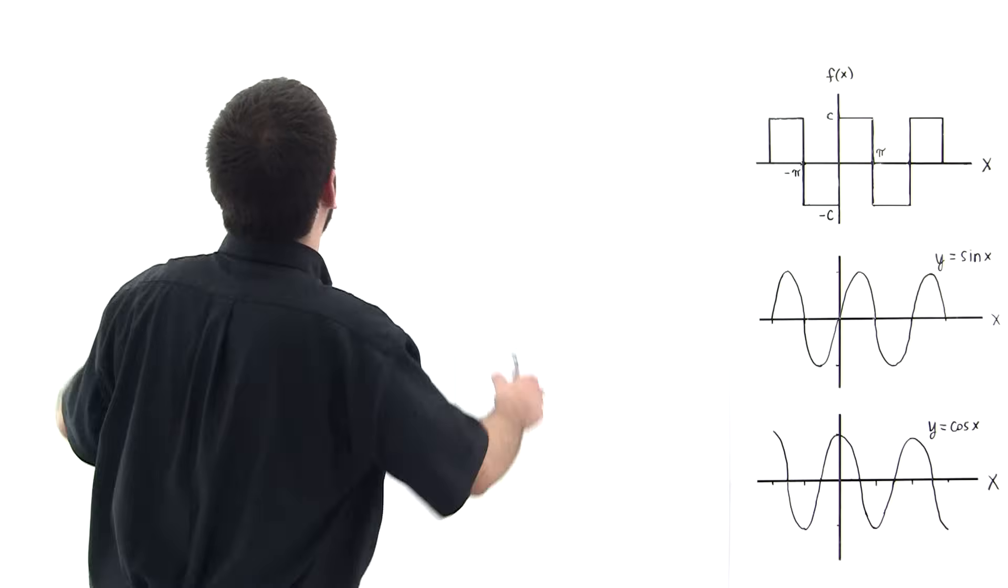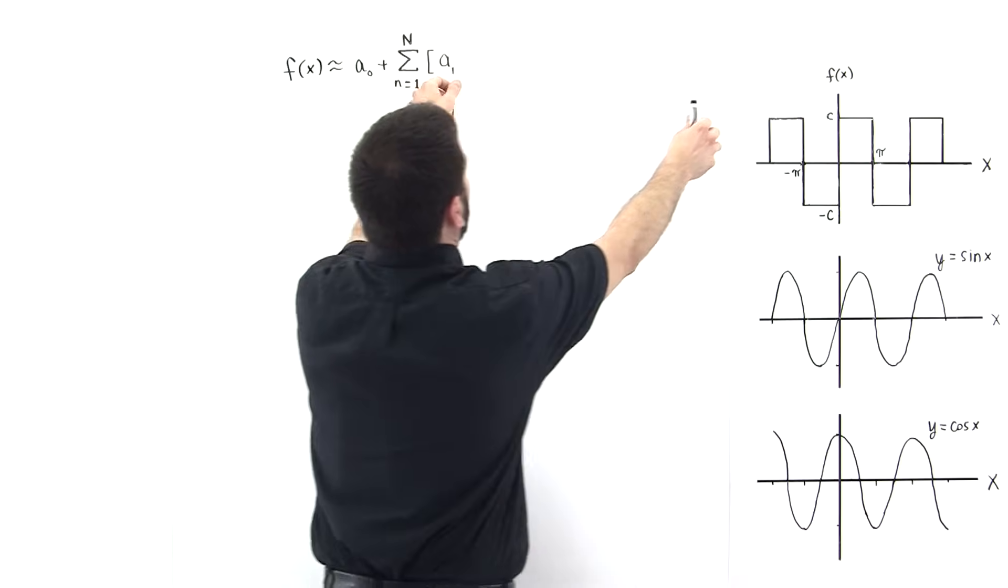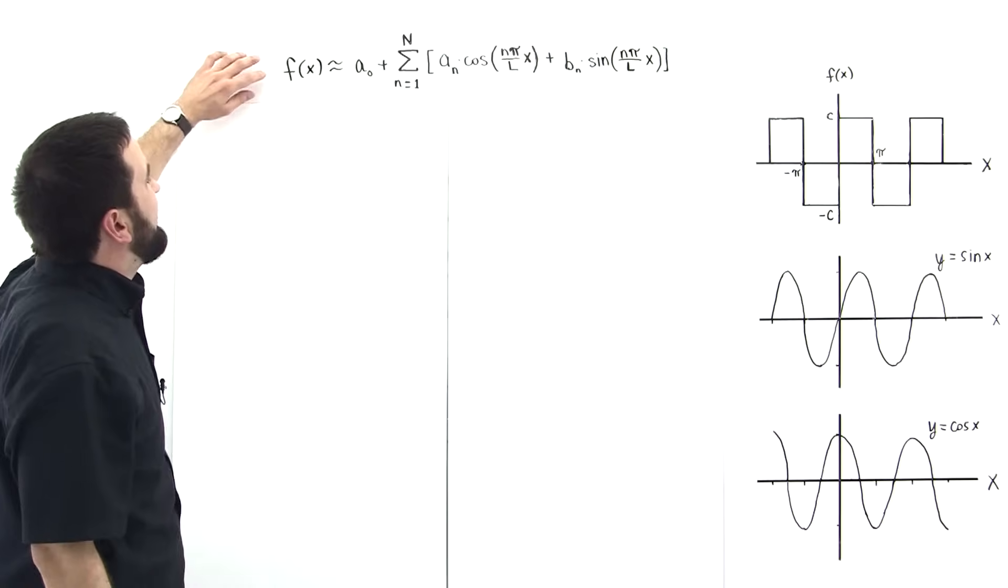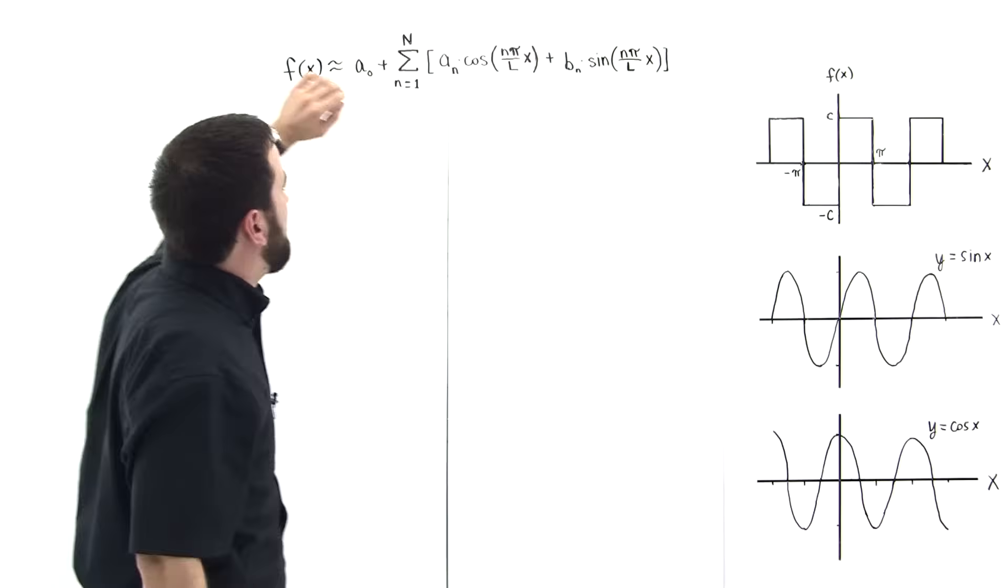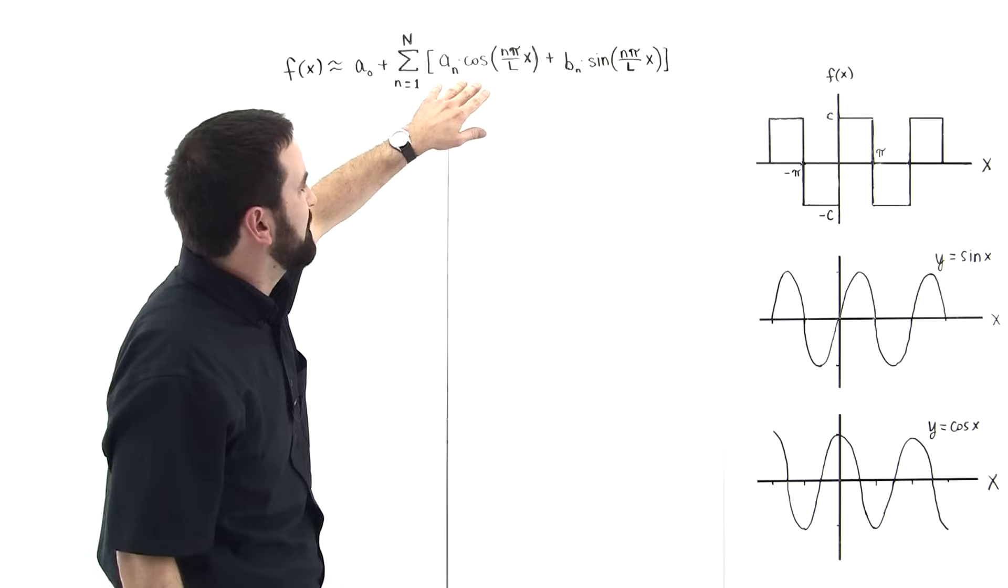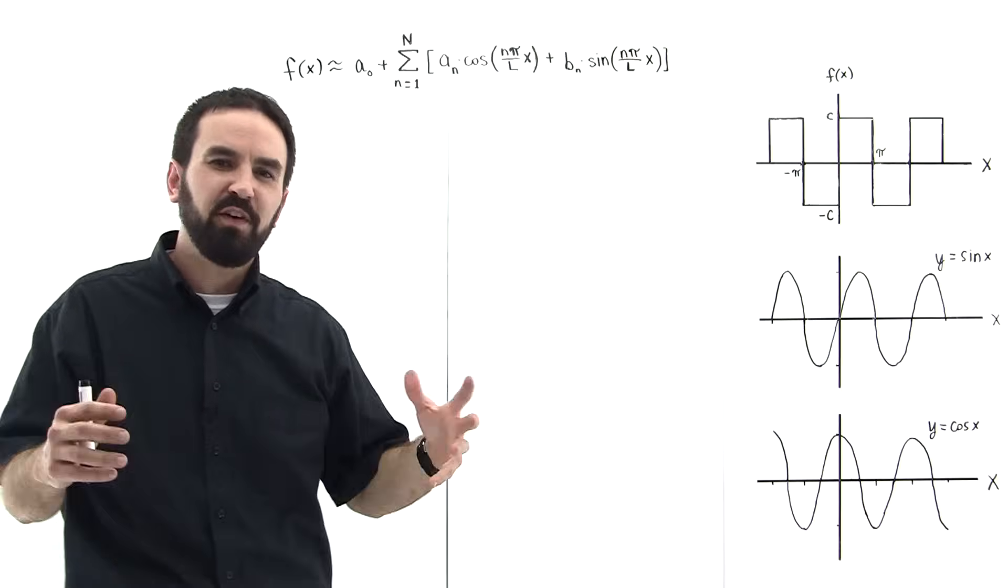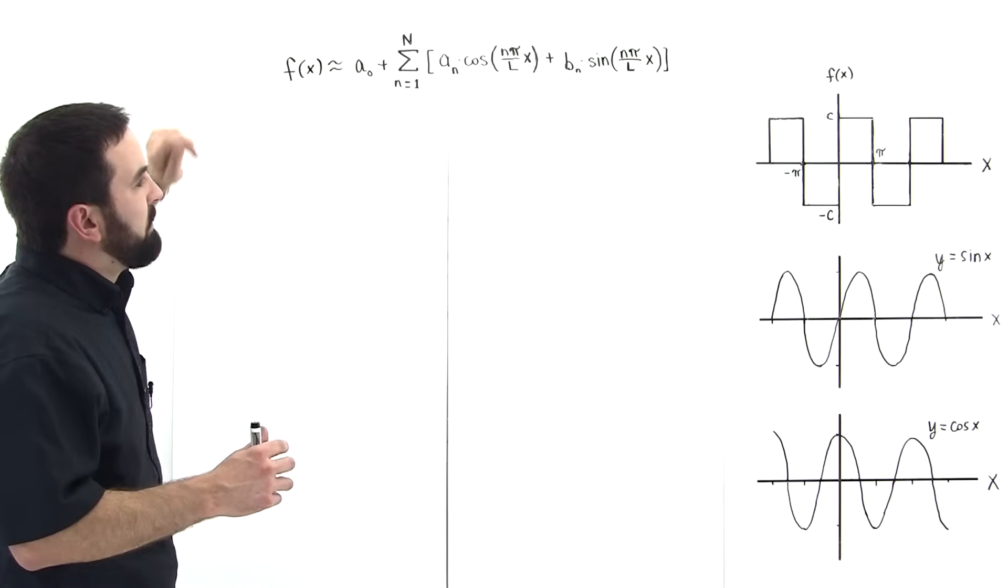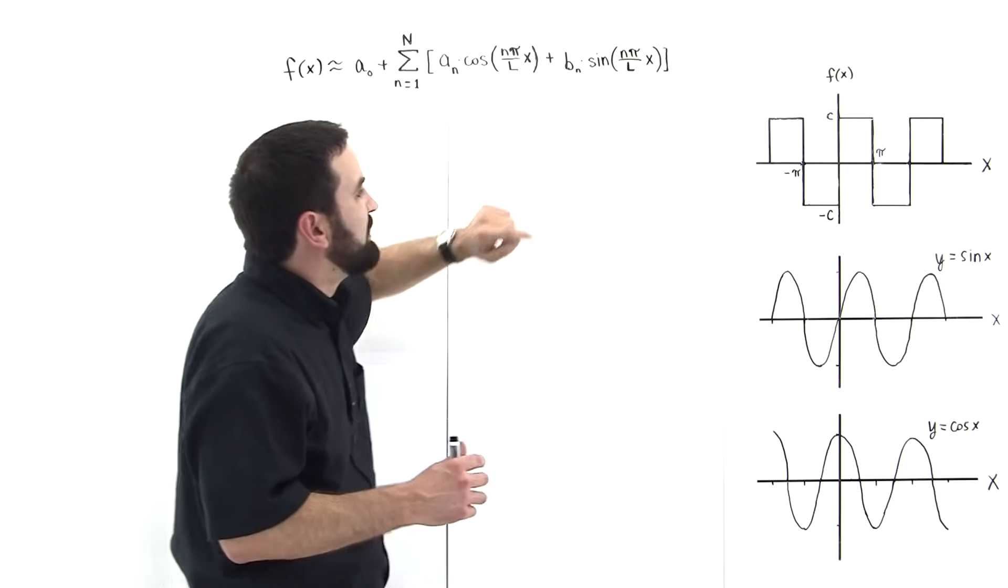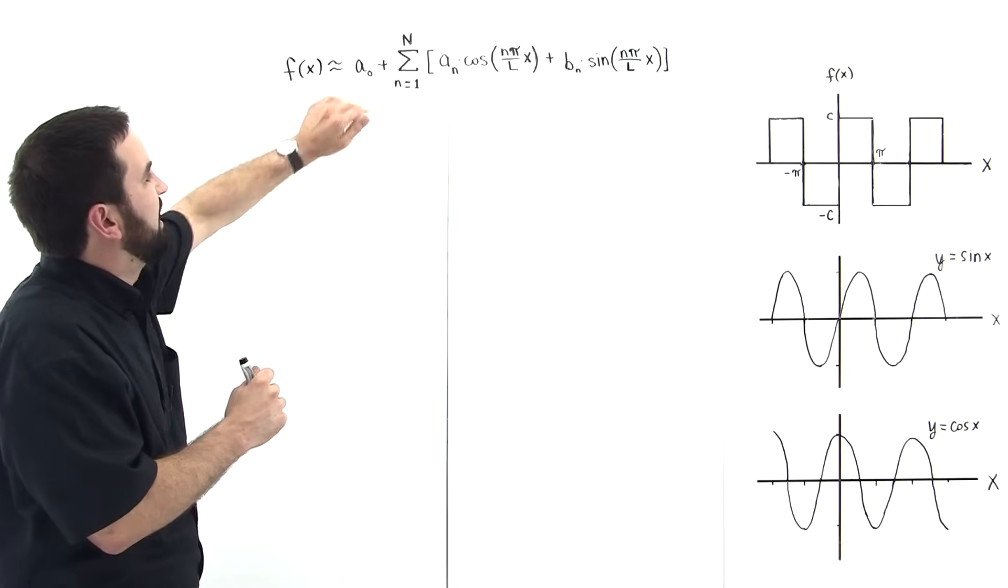So Joseph Fourier, in the early 1800s, hypothesized just that and then proved it. So let's take a look at what he proposed and then later proved. So he proposed that this function could be approximated by some constant plus a sum of cosine and sine functions. A combination of cosine and sine functions. And that any function could be modeled with this.